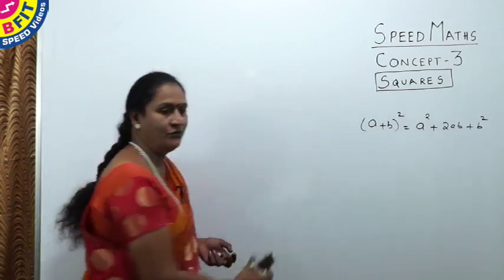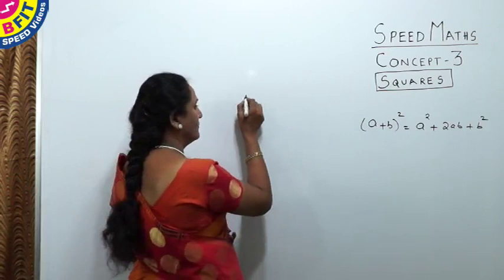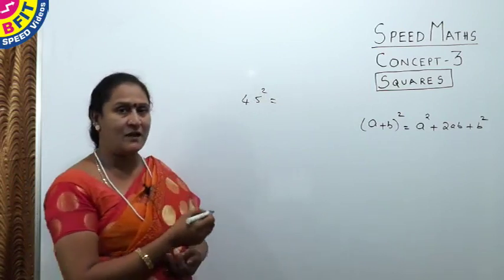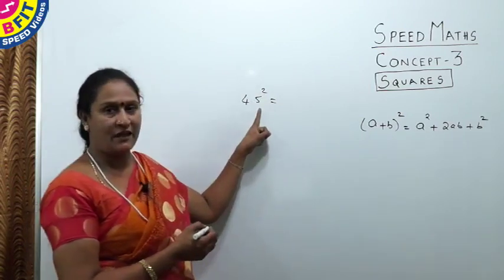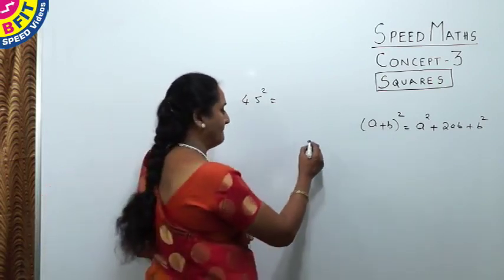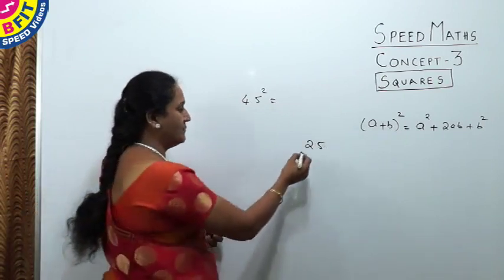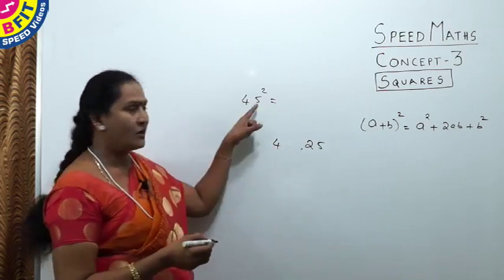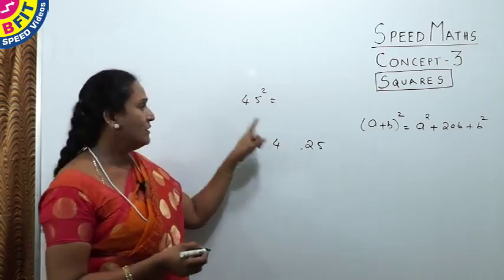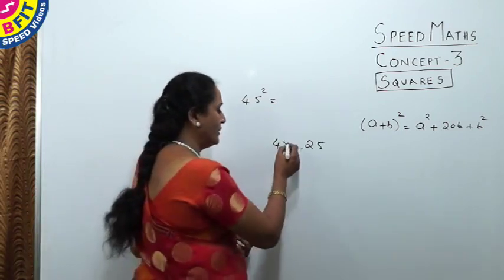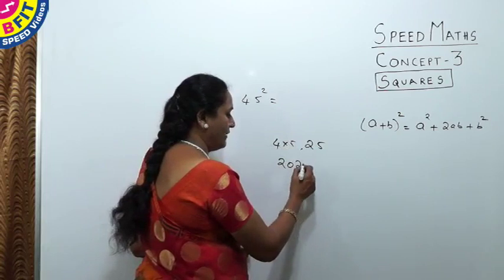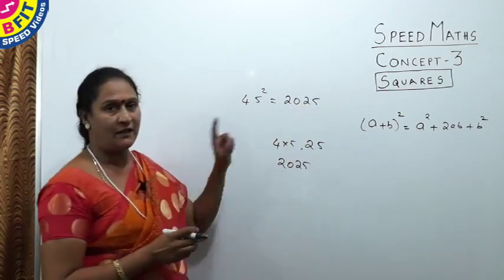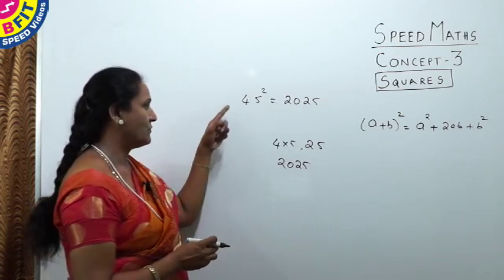Now working out the question: find the square of 45. It ends with 5, so the last two digits are 25. The remaining digit is 4, and 4 multiplied by its following number 5 gives 20. So 4 × 5 = 20, and writing 25 after it: the square of 45 is 2025.